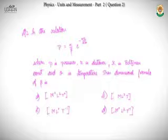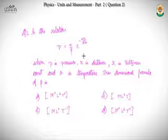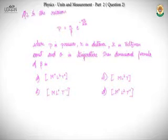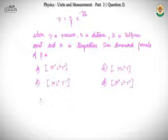Question two: in the relation p = (α/β)·e^(−αz/kθ), where p is pressure, z is distance, k is Boltzmann constant, and θ is temperature, find the dimensional formula of β. We have two unknowns — α and β — so we need at least two equations. The first comes from the principle of dimensional homogeneity.